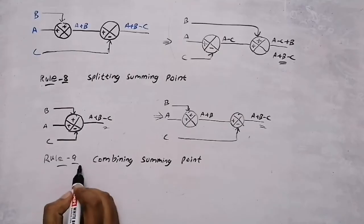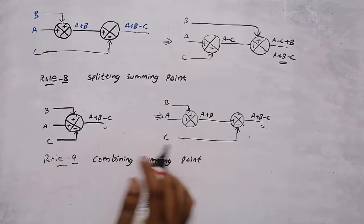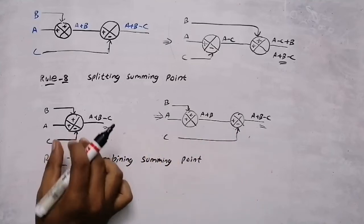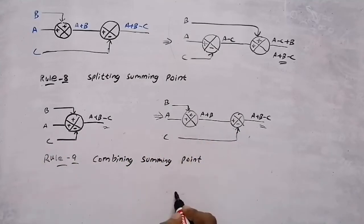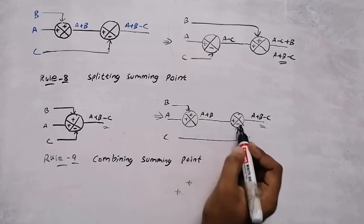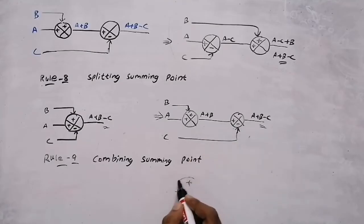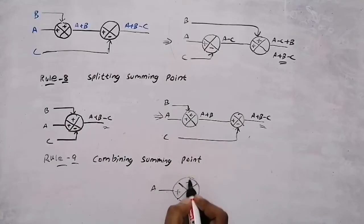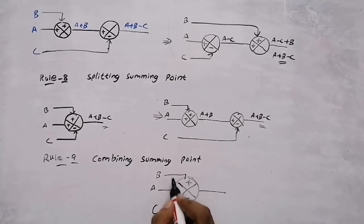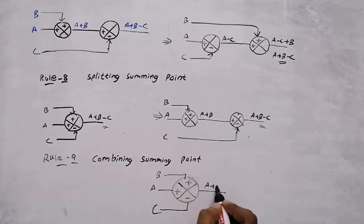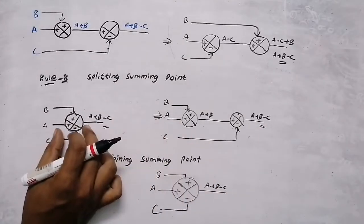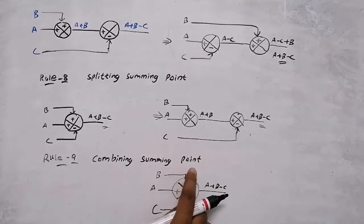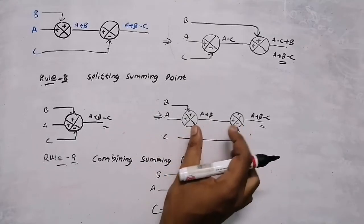Rule number nine: combining summing points — it is just the reverse process. When you have two summing points, you can combine them into a single summing point. The signs carry over: plus/plus from the first and plus/minus from the second become one summing point with inputs A (plus), B (plus), and C (minus), giving output A+B−C. Same output.